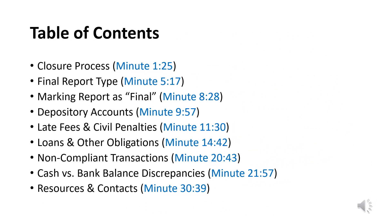The following presentation was created for campaigns to use as a reference before requesting closure. Please note that the list below does not include all items reviewed by the audit and enforcement unit. This resource is meant to cover the most common items that prevent timely closure, and does not provide legal advice or absolve a committee from complying with state and/or local election laws.